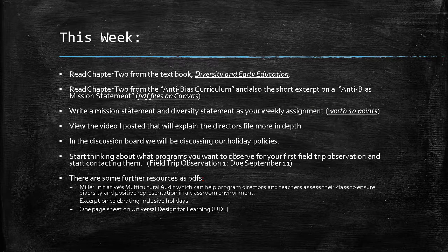So this week, here is what we're going to be working on. First, I'd like you to read Chapter 2 from the textbook, entitled 'Diversity in Early Education.' I've highlighted some pages that are going to be really important to help you with your assignments. I also have Chapter 2 from the Anti-Bias Curriculum — that's a PDF on Canvas. There's also a three-page excerpt from the same curriculum called the Anti-Bias Mission Statement, and this is really going to help you come up with your diversity statement.